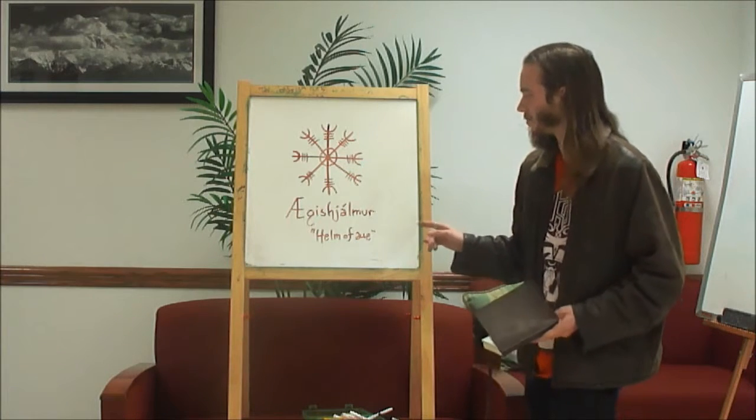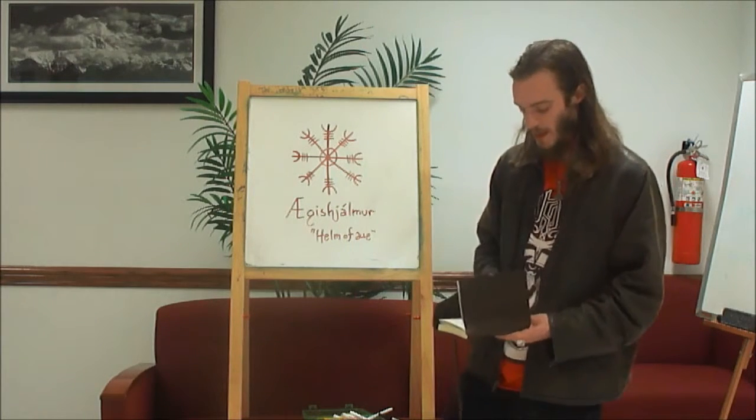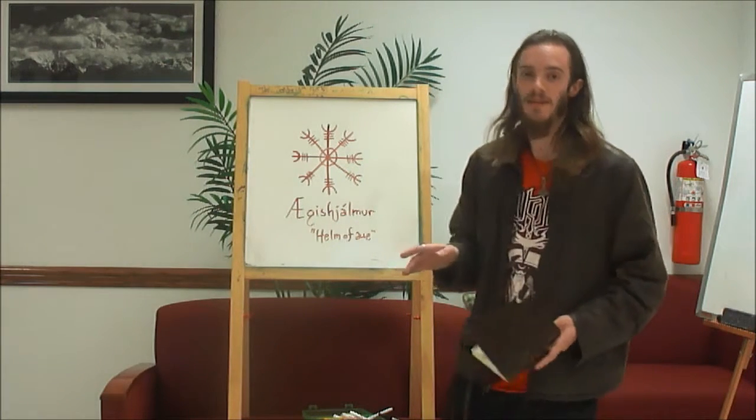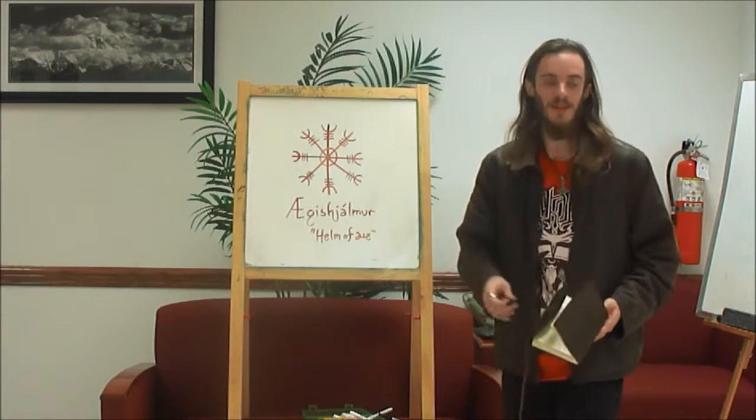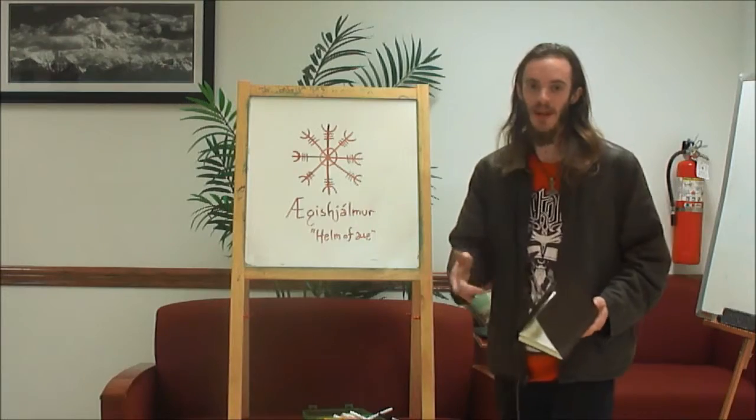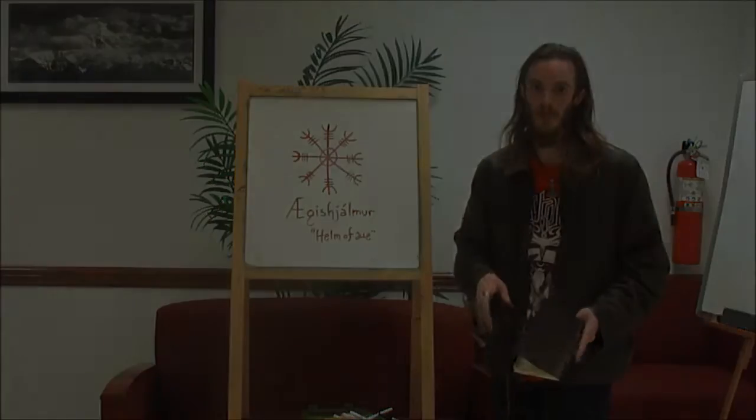This one is the Aegis Hjalmur, the Helm of Awe. It's to be carved or painted on metal or wood and placed on one's brow on a helmet. It's meant to instill fear and terror inside one's enemies when you're fighting.